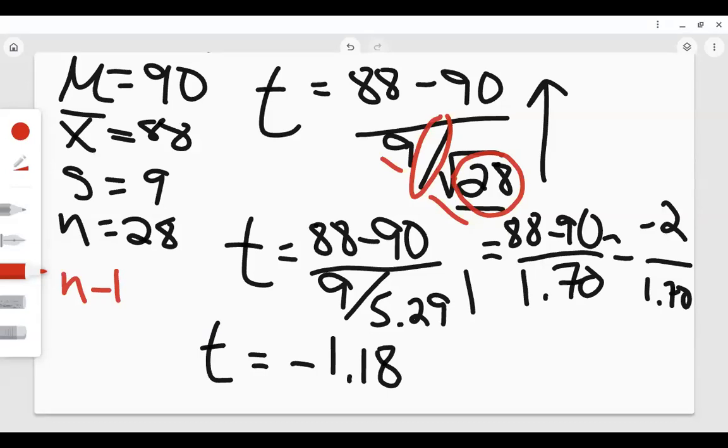And lastly, another mistake I see is that people plug it into their calculator as 88 minus 90 minus 9 divided by 5.29. That violates PEMDAS, right? So you have to solve them in order. And that's why I recommend that you solve it from the bottom up.